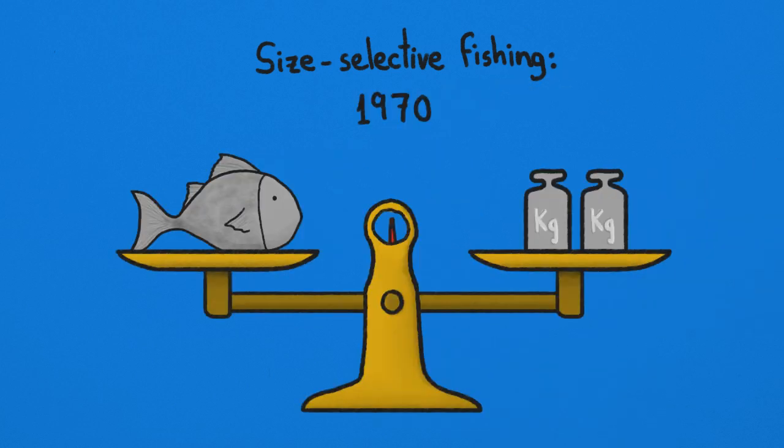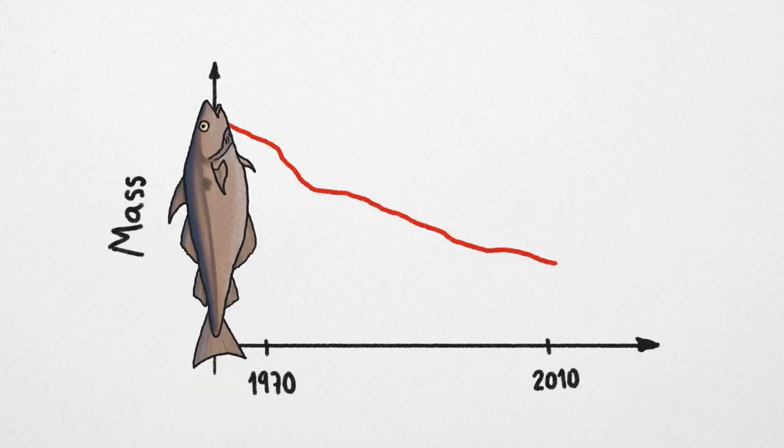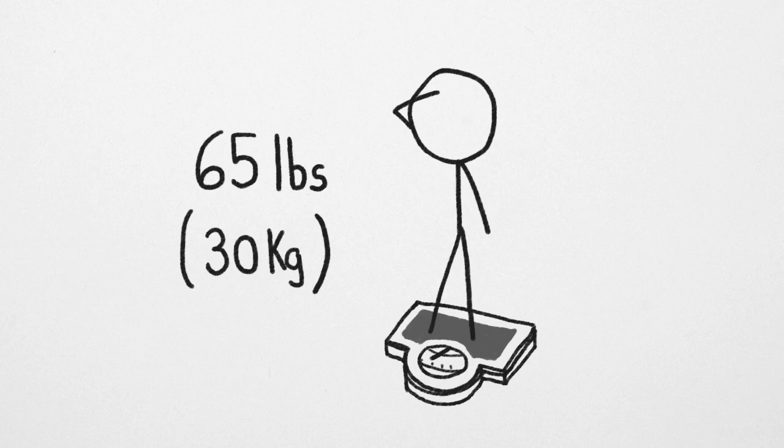Let me say that again, heavily-fished fish are now half the weight they used to be. Six-year-old haddock, for example, weigh 40% of what they did in 1970. Imagine if full-grown men weighed 65 pounds.